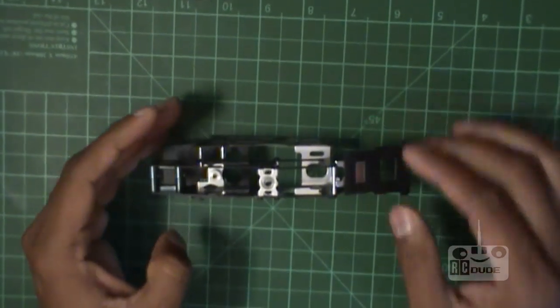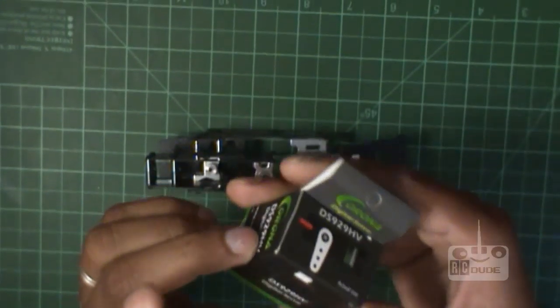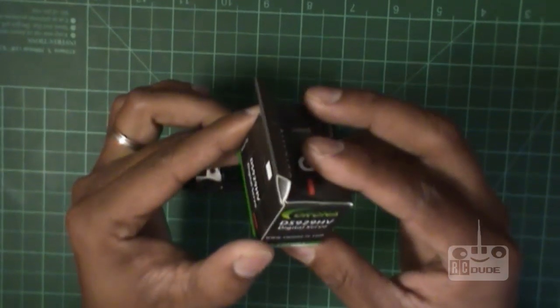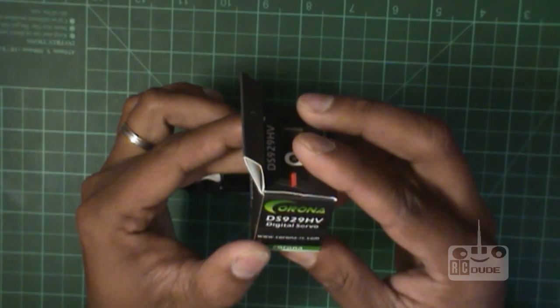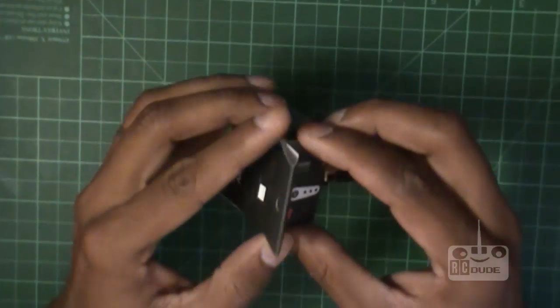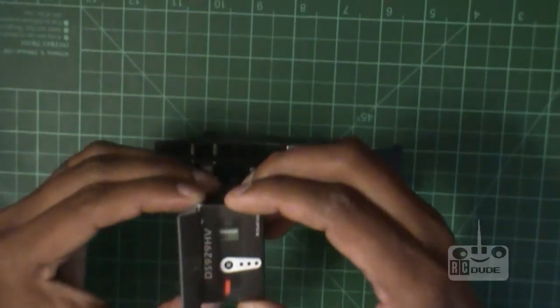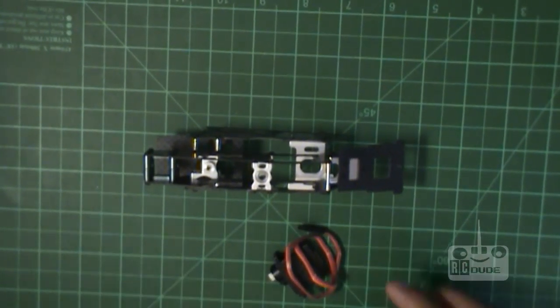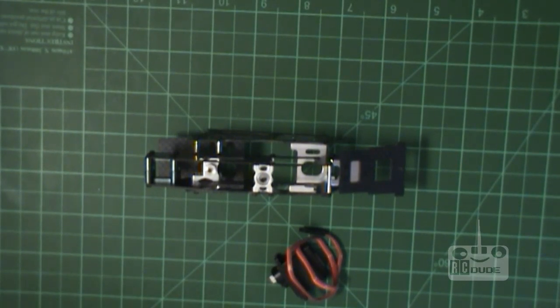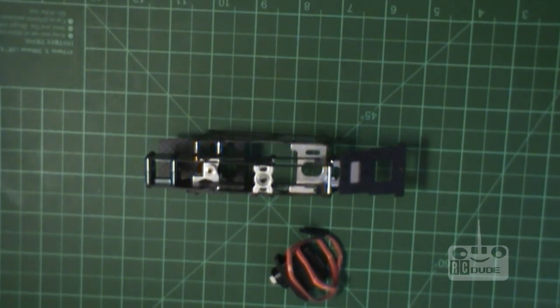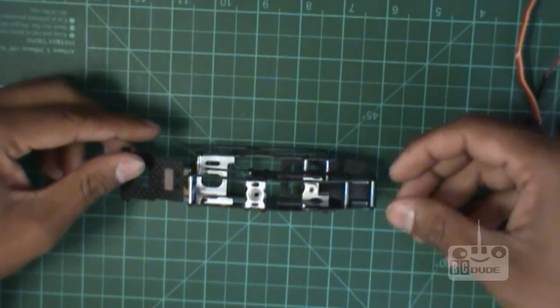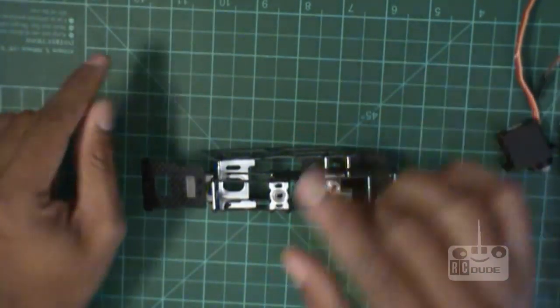That's your frame. For the servo, I'm going to use a 9 gram Corona digital servo, Corona DS929HV. I like metal gear servos. So we're going to use these servos. Let's take this one out.